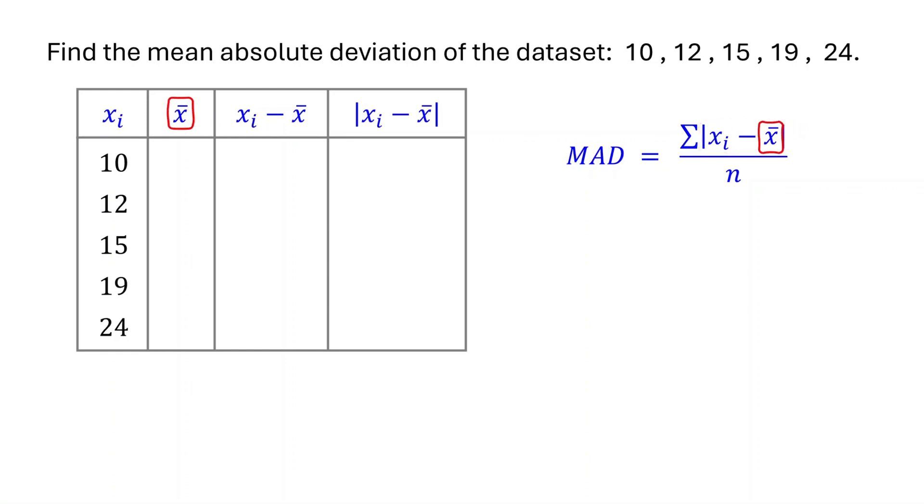Now the first thing to find is the mean. The mean is the sum of all data points divided by the number of data points. So first, add up all the data points. Then, divide by the number of data points.